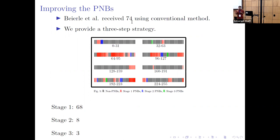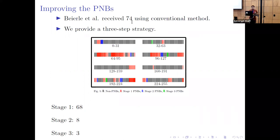Instead of the conventional threshold approach, we change the strategy slightly and propose a new three-step strategy. In the first stage we got 68 PNBs, in the second stage 8 more, and finally 3 more — the reds from stage 1, blues from stage 2, and greens from stage 3. Using this strategy we got better PNBs, and finally we obtained 79 PNBs in total.